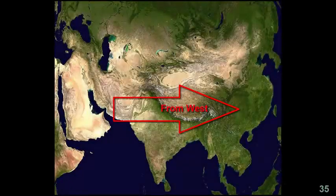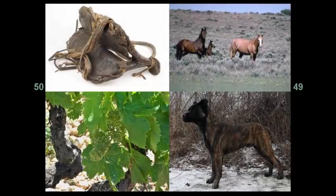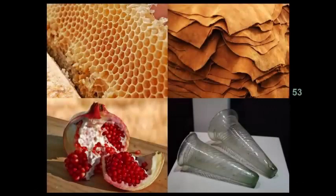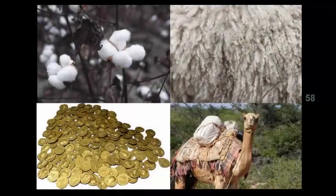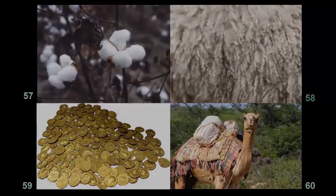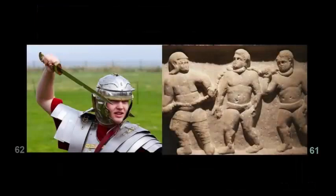From west to east, these goods included horses, saddles and riding equipment, grape vines and winemaking techniques, dogs and other domesticated pets, animal furs and skins, honey, fruits, glassware, woolen blankets, rugs and carpets, woven textiles, gold and silver, camels, slaves, weapons and armor.